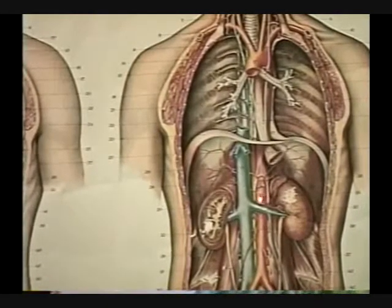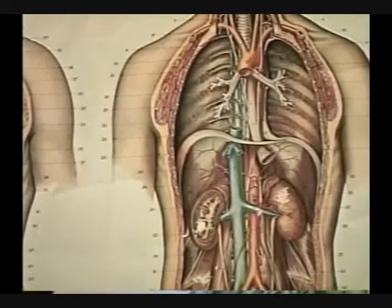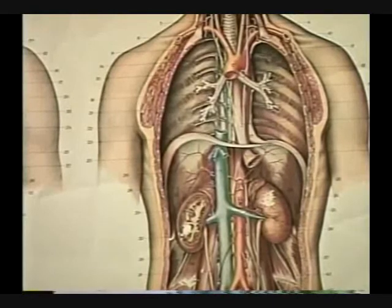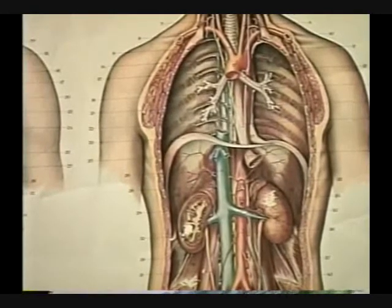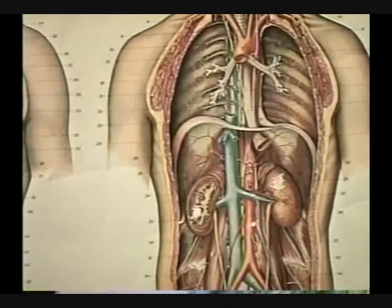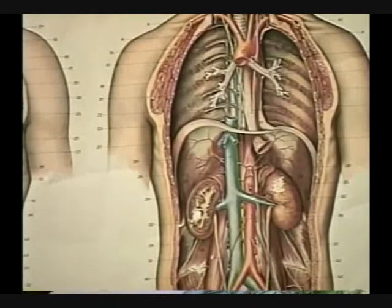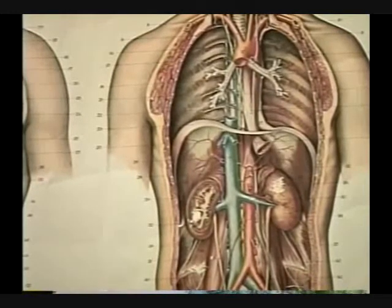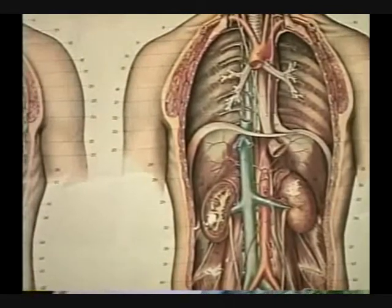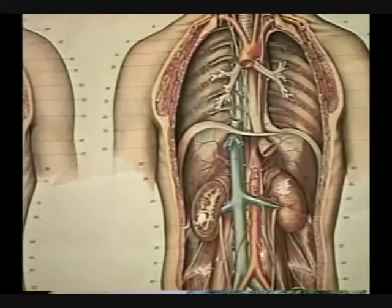Then we have a superior mesenteric artery, which takes blood primarily to the small intestines. A pair of renal arteries taking a large percentage of your blood to the kidneys — we'll deal with those in more detail when we get to the urinary system. We go down further and we have a pair of gonadal arteries. They are the gonadal arteries because they go to the gonads. They can be the ovarian arteries in females, or the testicular arteries, or the spermatic arteries in a male going to the sperm-producing testicles. You will see various names for these gonadal arteries.